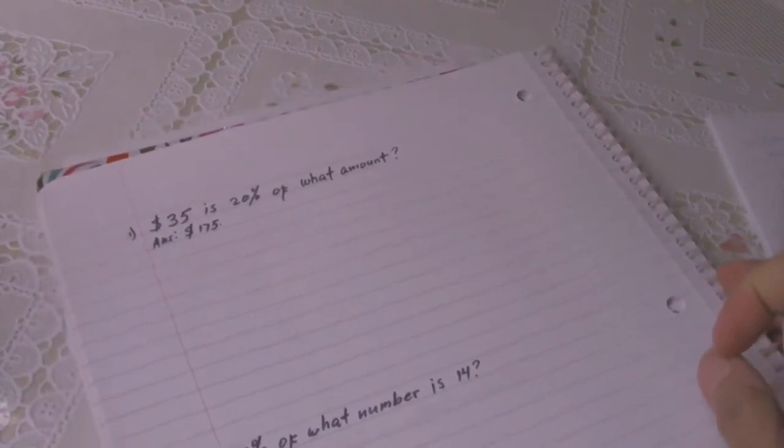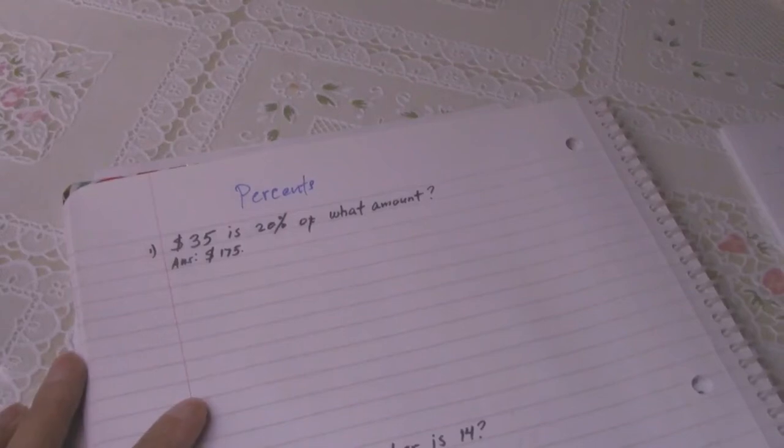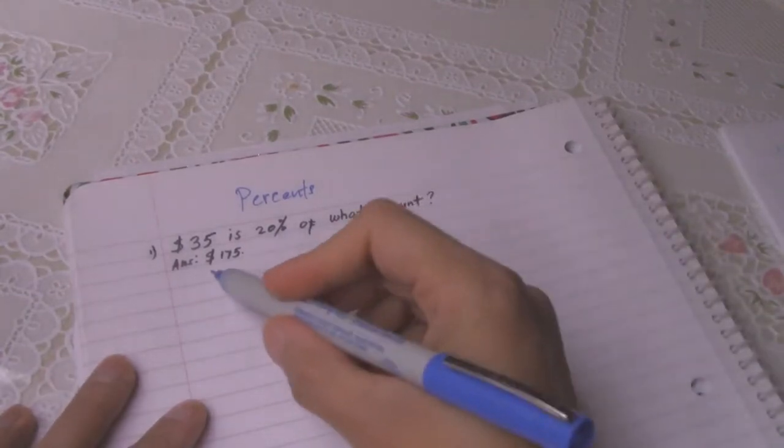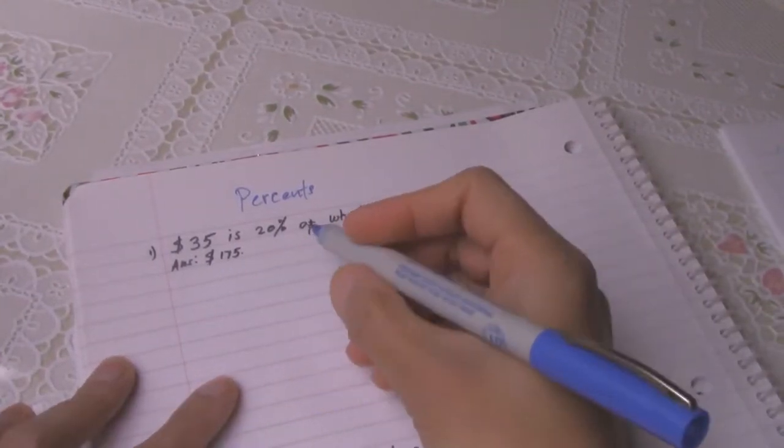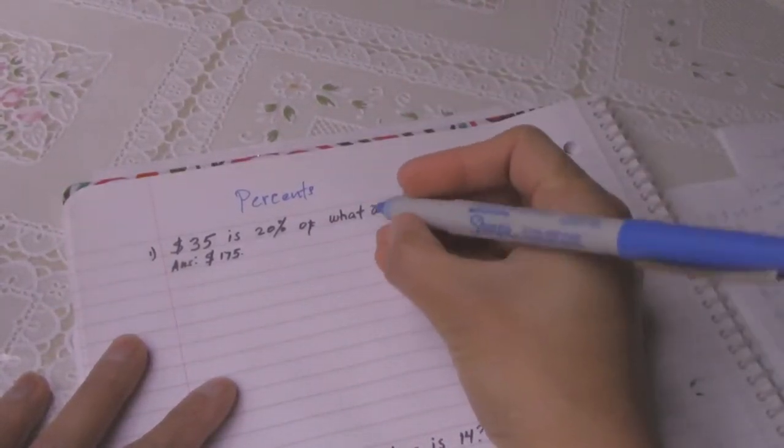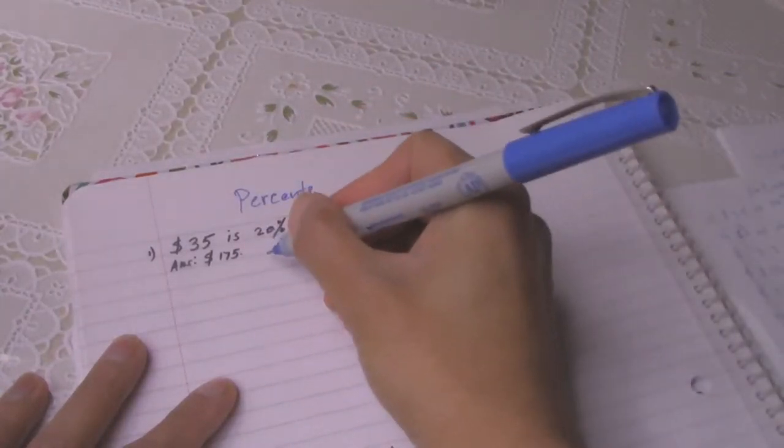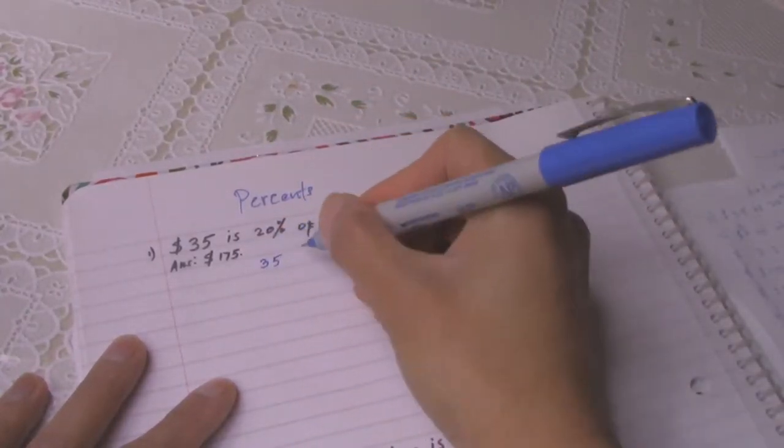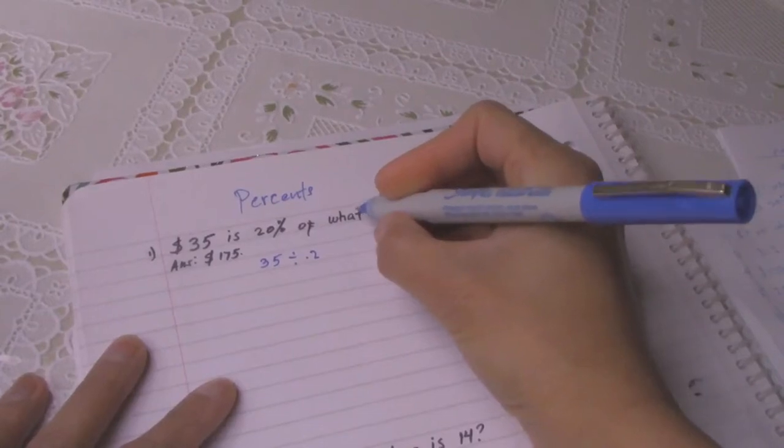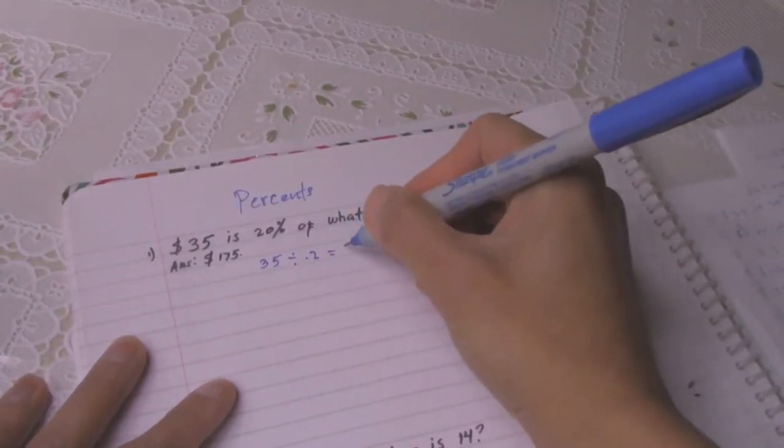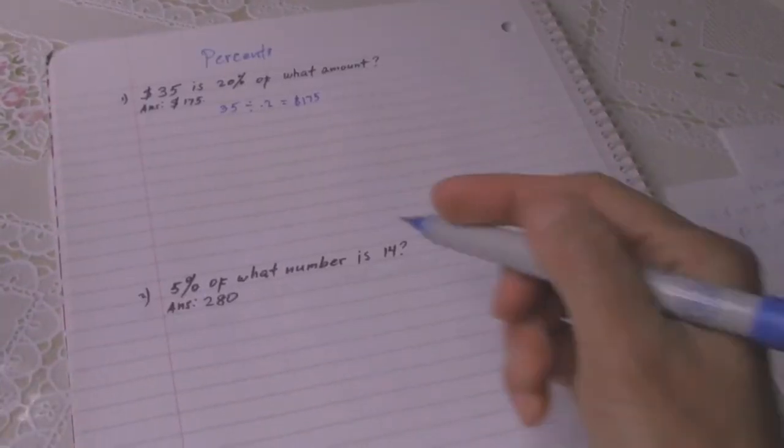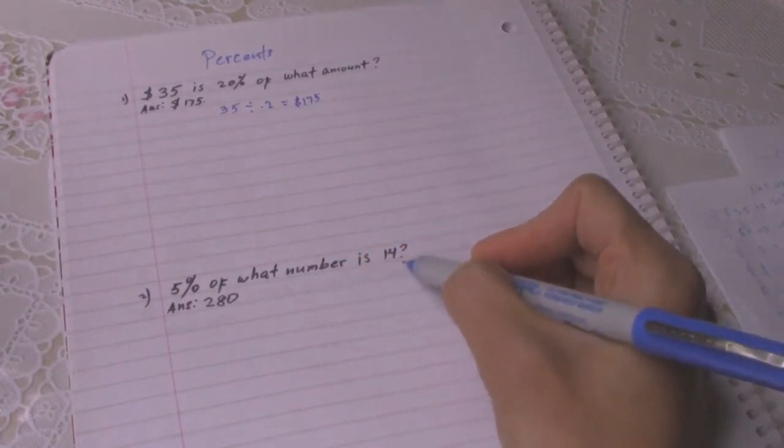So here, this is percents. Number 1: 35 dollars is 20 percent of what amount? The answer is 175 dollars. So how do you get the answer? You divide 35 divided by 0.20 equals 175 dollars.